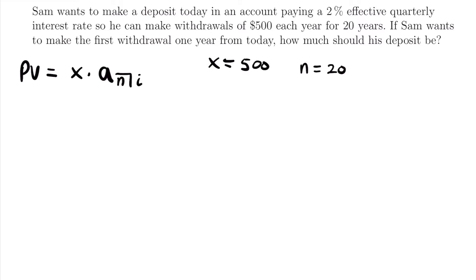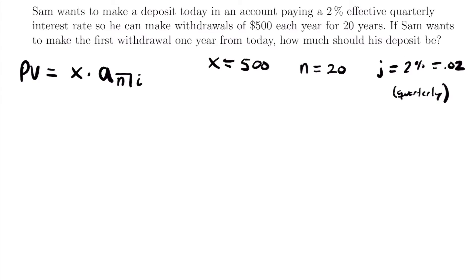Now let's find our interest rate. We have a 2% effective quarterly interest rate — that's not an annual rate. I'll label it J, equal to 0.02. This is a quarterly rate, but to use this formula, the interest rate needs the same frequency as the payment period. Sam withdraws $500 each year, not each quarter, so we need to convert this quarterly rate to an annual effective interest rate.